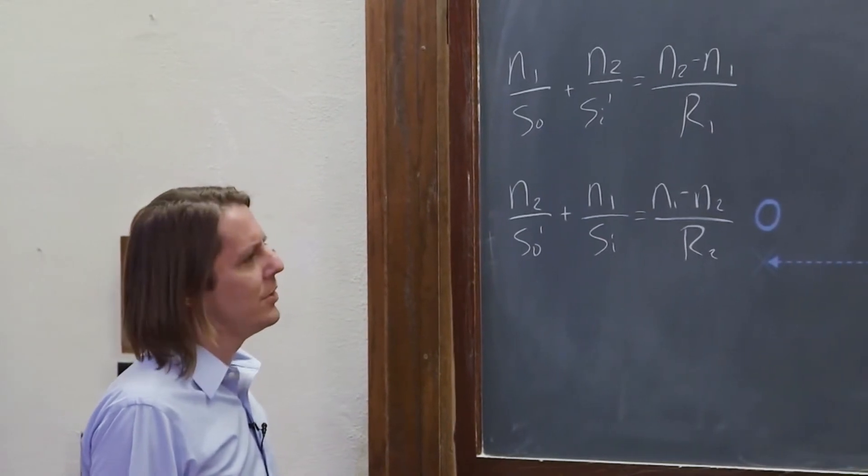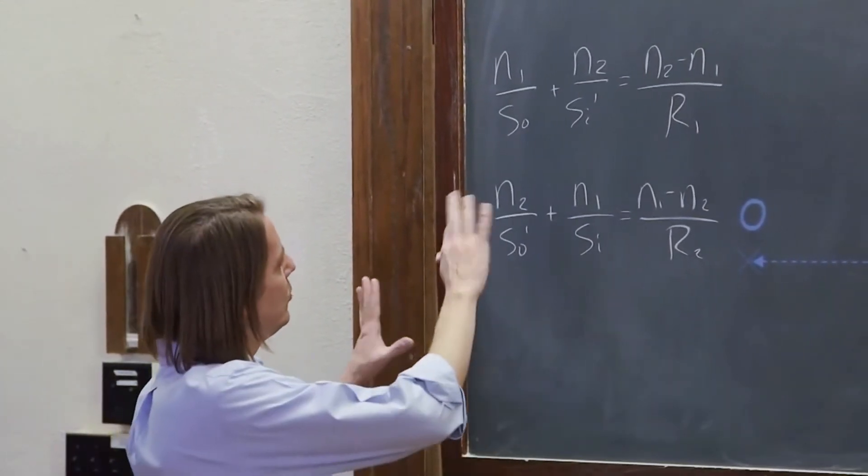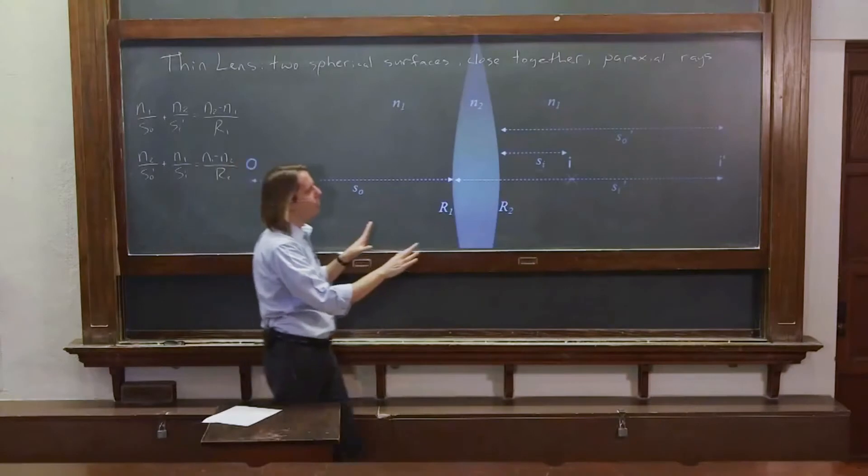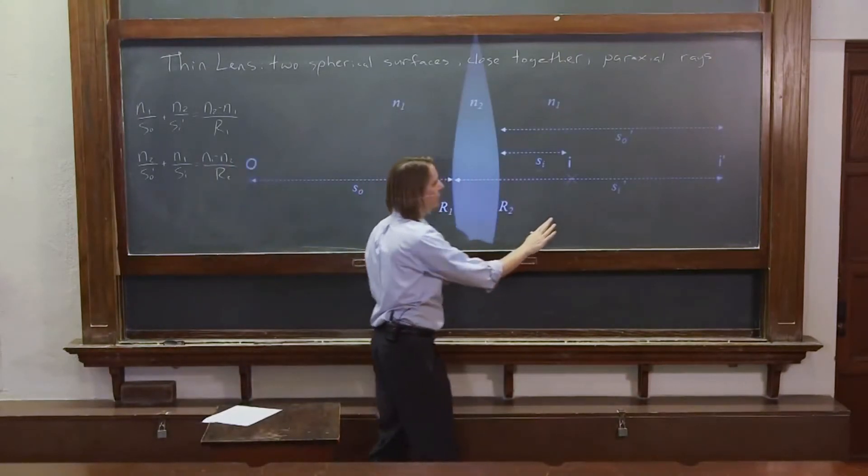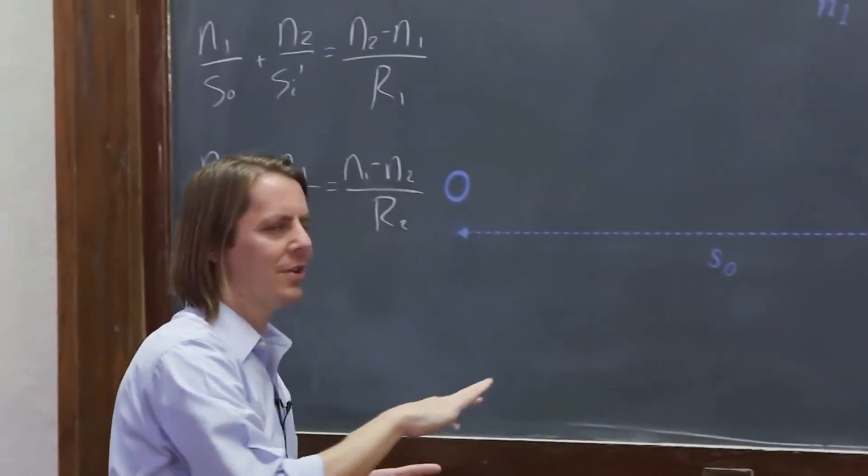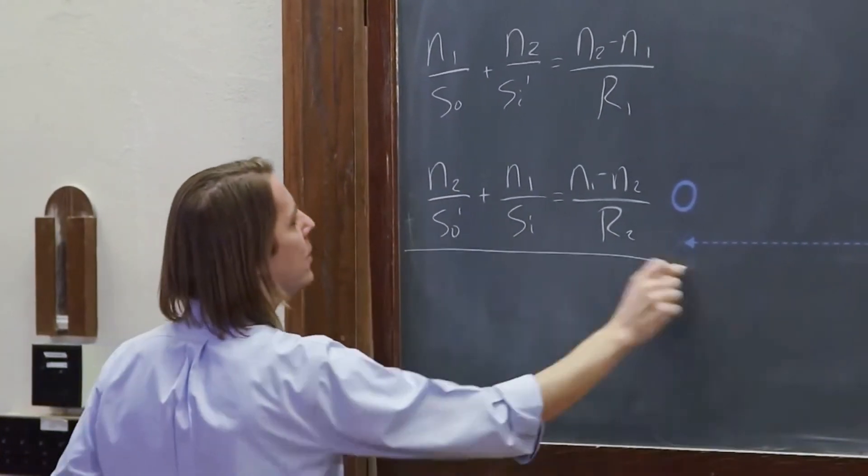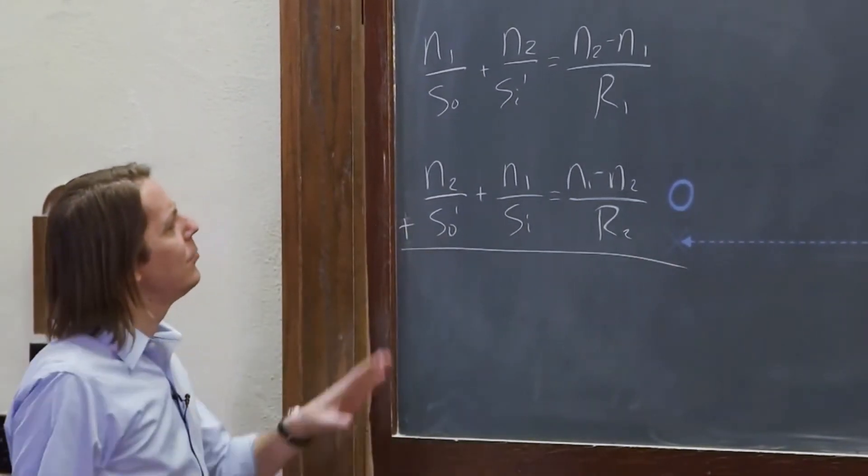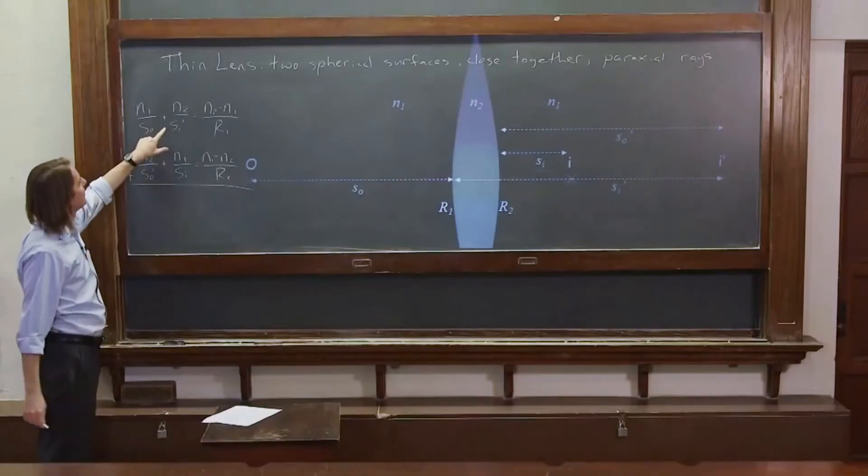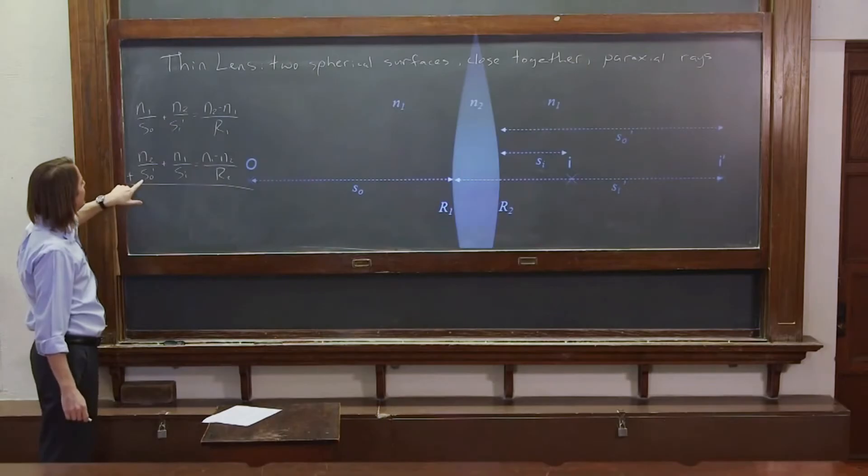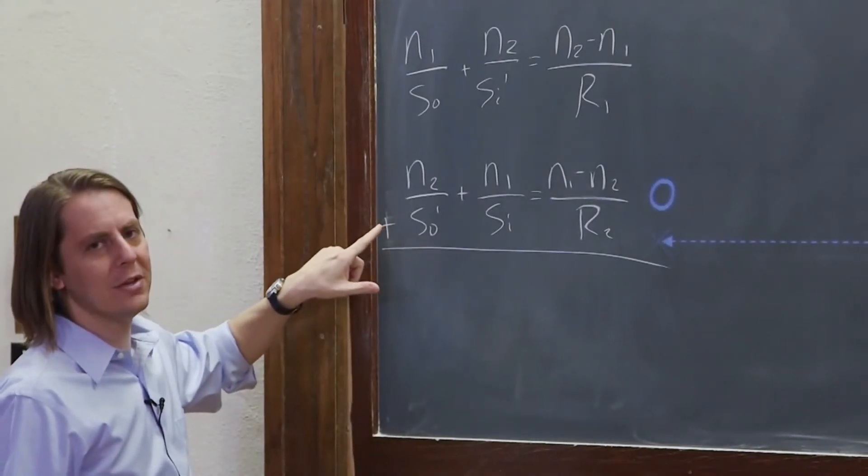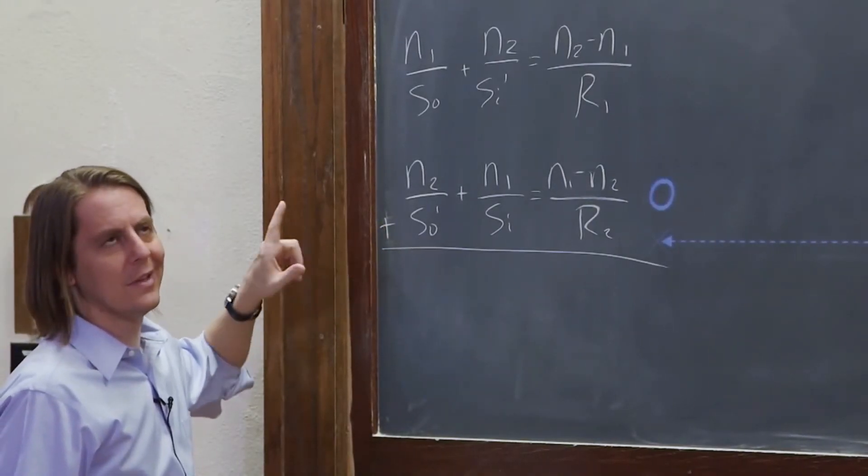And then what we're going to do now is we want to deal with these and we want to use them in a way that we get rid of the whole intermediate image part. We just want to think about the real object and the real image. So we're going to add them and really we want these two terms to go away because this one involves the intermediate image distance and this one involves treating the intermediate image as an object distance.